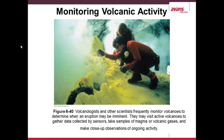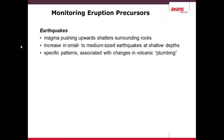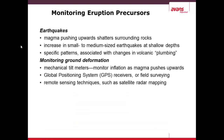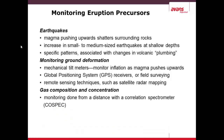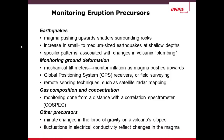Monitoring volcanic activity — which itself has its own hazards — is very important. Earthquakes can be a precursor to a volcanic eruption. Using satellite images, GPS receivers, and remote sensing techniques, you can see how fast an erupting volcano is changing and determine if an eruption is imminent. Gas composition and concentrations are also closely monitored, as well as other precursors such as small changes in gravity and fluctuations in electrical conductivity due to changes in the magma.